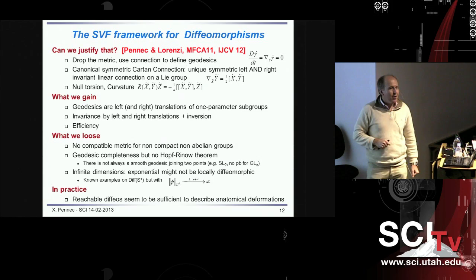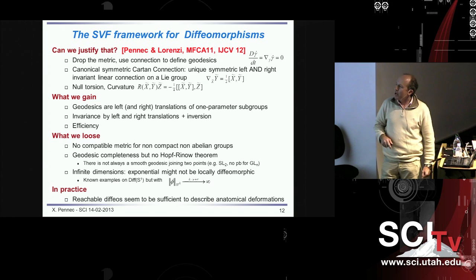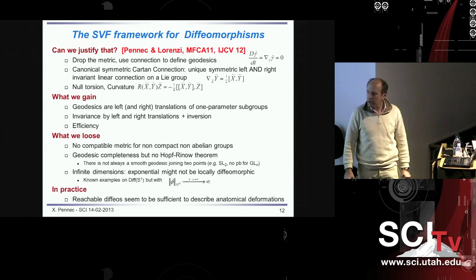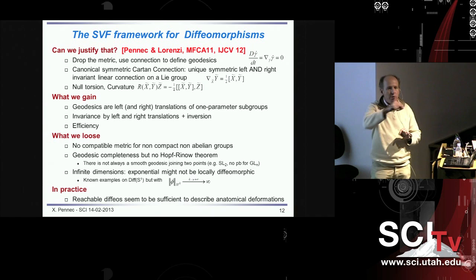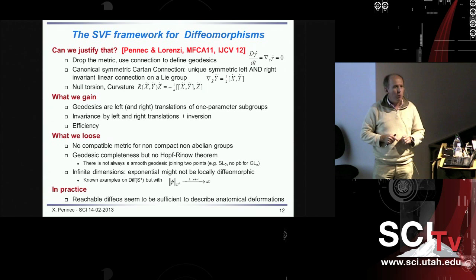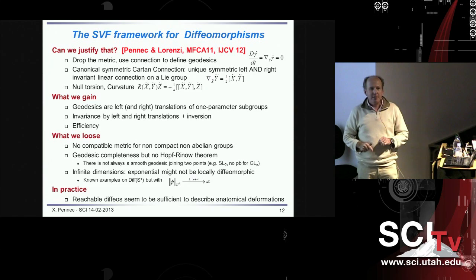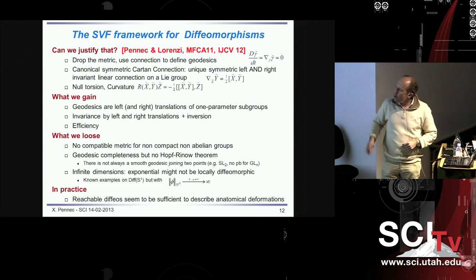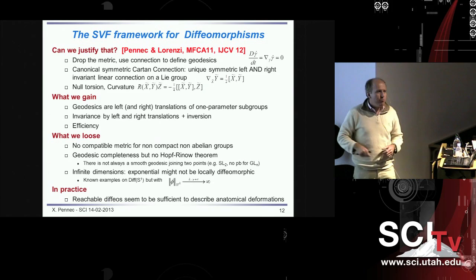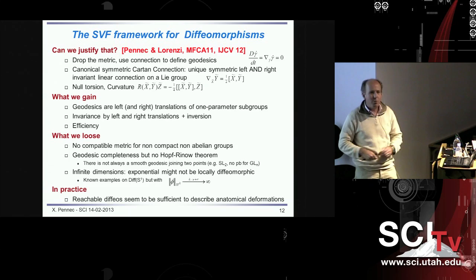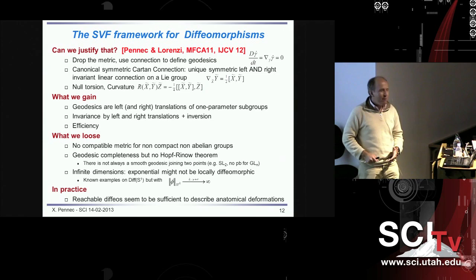With this connection, we can compute the curvature, and it is extraordinarily simple compared to LDDMM. We know that geodesics are left and right translations of one-parameter subgroups — so we know all the geodesics, they are very simple. We have invariance by left and right translation, and also invariance by inversion, meaning we will automatically be inverse consistent. On the other side, we lose things — there's no free lunch. There is generally no compatible metric. We have geodesic completeness, but it doesn't mean we can reach any two points by a geodesic. However, we can always reach any two points by a constant acceleration curve. In practice, we don't really care, because the set of diffeomorphisms we cover is way sufficient.